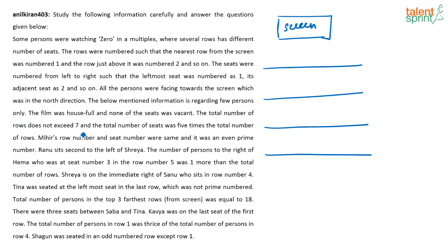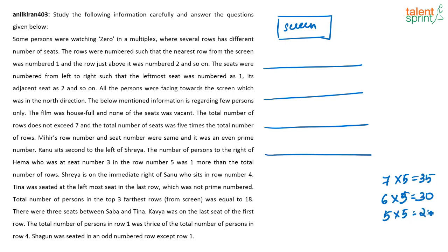The total number of rows does not exceed 7, and the total number of seats is 5 times the total number of rows. So maximum there can be 7 rows. If there are 7 rows, there are 35 seats. If there are 6 rows, 30 seats. If there are 5 rows, 25 seats, and so on.